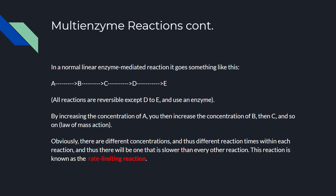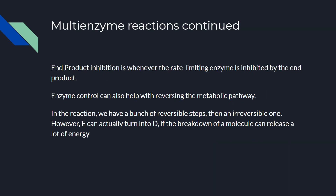Looking at how the metabolic pathway can be reversed: in the reaction, we have a bunch of reversible steps — all of them are reversible except from D to E. That step is irreversible because it takes too high an energy input to actually reverse it. However, E can turn back to D if a second separate reaction releases a large amount of energy, using a different enzyme. This is shown with bold arrows indicating the reversibility between E and D via that alternative pathway.